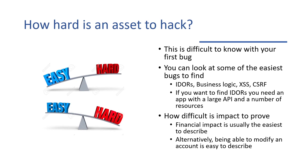My advice is really to look at some of the easiest bugs to find: IDORs, business logic, cross-site scripting, CSRF — and then look at the requirements that sort of demands of an app. This can give you another idea of not just what to hack on, but also how difficult it is. If you want to find IDORs, you need an app with a large API and a number of resources. A basic web app with just users and tweets — that's only two types of resources. You want something with a lot of varied API endpoints, maybe different versions of APIs.